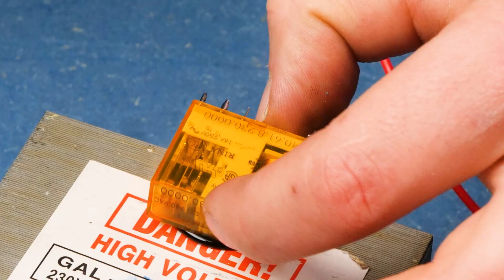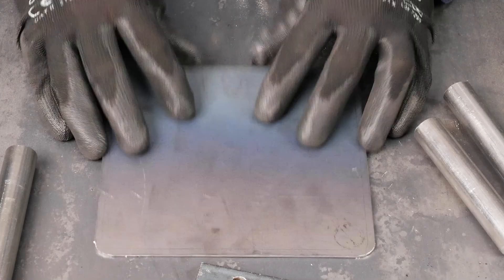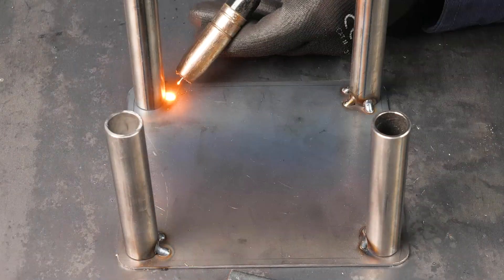To ensure everything works smoothly, I solder a control relay and cover the terminals with shrink sleeves. I then take an iron sheet and weld sleeves to its corners, adding a side support and a nut to the sleeves.